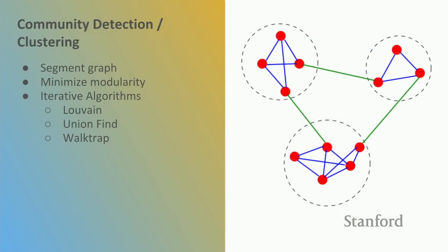Community detection, or clustering, is a way to segment the graph — to find partitions or communities in the graph. There are lots of different iterative algorithms to do this. Basically they all work by minimizing modularity, which is the ratio of relationships inside the network to the relationships outside of the cluster.